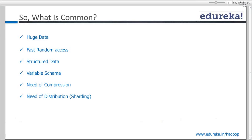Another important thing is distribution. How did we do distribution in Hive? Basically by using partitioning — sharding means partitioning your data. We saw how we did that in Hive. That partitioning in Hive was manual: we had to create partitions based on certain columns, and as data grew, we did insert overwrite, creating separate folders for each month or whatever the partitioning column was.